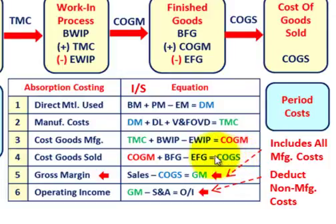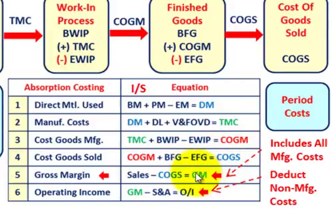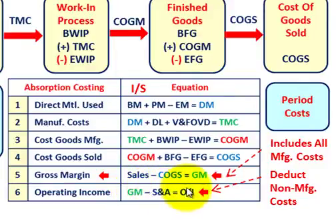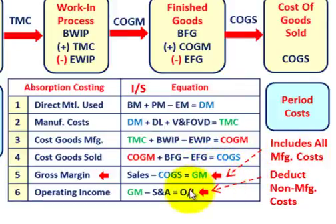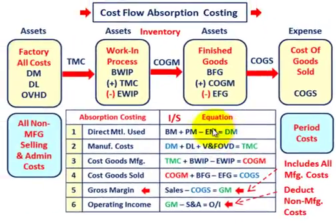Continuing the income statement: step four, cost of goods sold equals cost of goods manufactured plus beginning finished goods minus ending finished goods. Step five, gross margin equals sales for the period minus cost of goods sold. Step six, operating income equals gross margin minus all selling and administrative expenses. So the gross margin includes all manufacturing costs, and then you deduct all non-manufacturing costs to arrive at operating income.